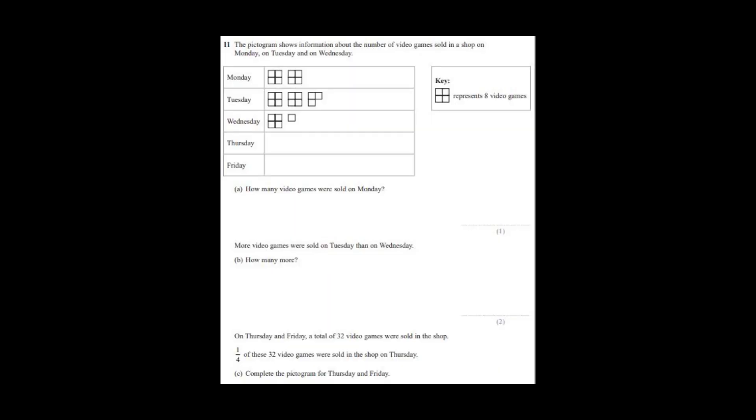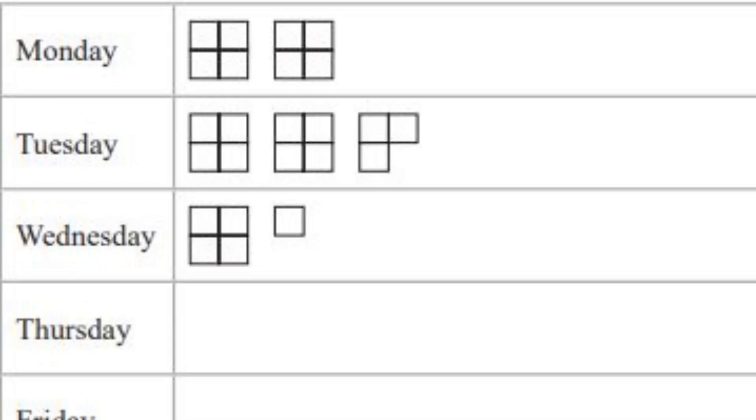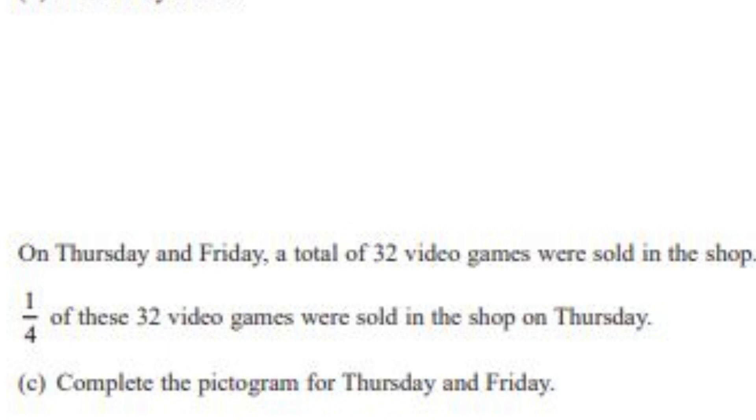I like pictograms, they're easy. The pictogram shows the number of video games sold on Monday, Tuesday, and Wednesday. Four squares represents 8 video games, so each square is 2. How many games were sold on Monday? 8 plus 8 is 16. More games were sold on Tuesday than Wednesday, how many more? Tuesday had 22, Wednesday had 10 — so 22 take away 10 is 12. On Thursday and Friday a total of 32 games were sold, a quarter of these were sold on Thursday.